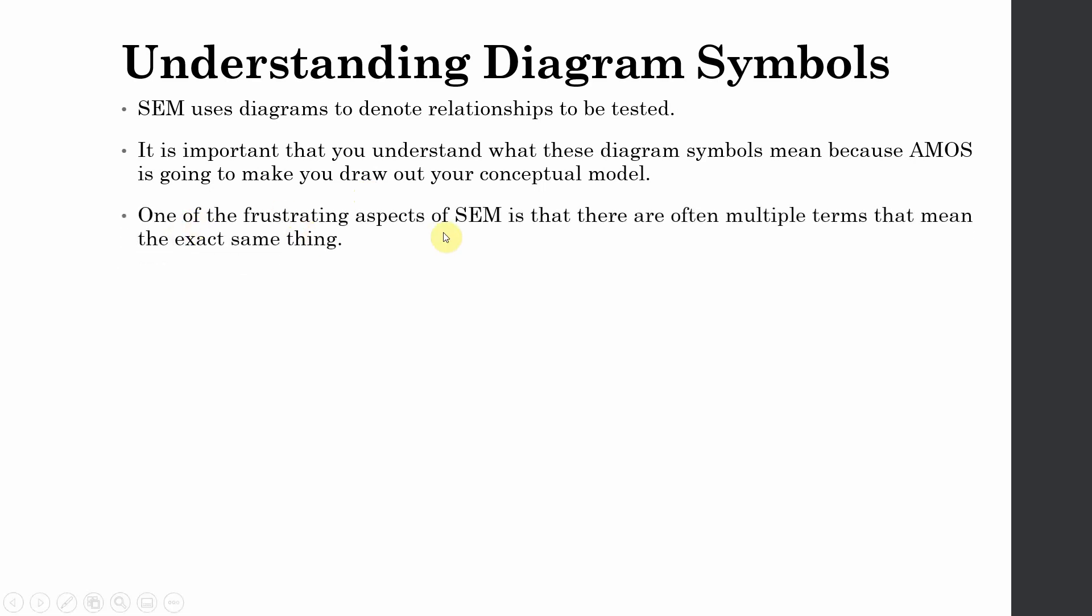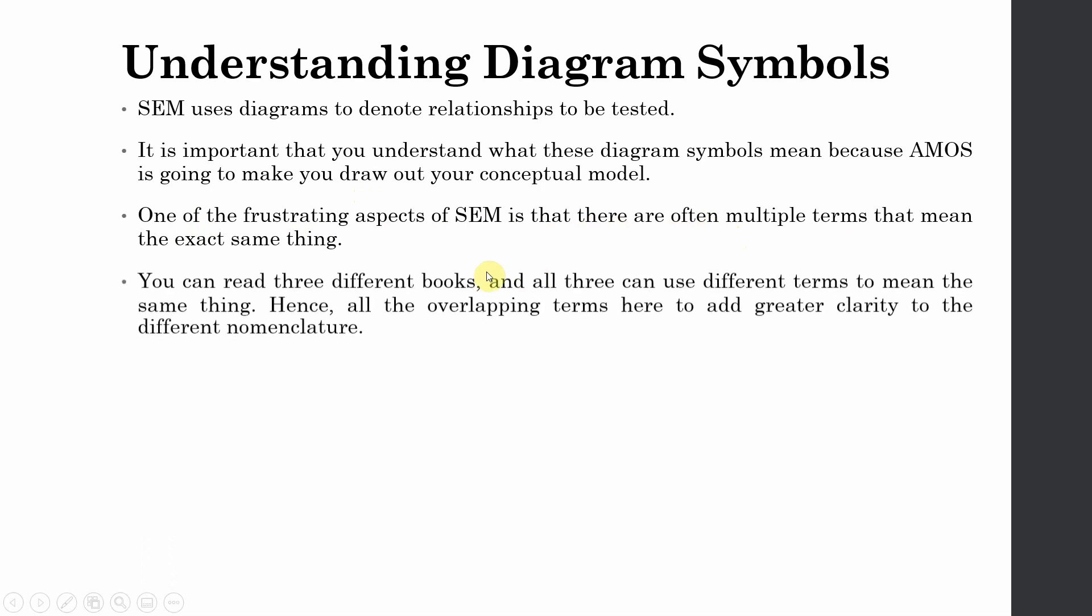One of the frustrating aspects of SEM is that there are often multiple terms that mean exactly the same thing. You can read three different books and all three different terms mean the same thing. They are using different terms but they actually mean the same thing. Hence, the overlapping terms here add greater clarity to the different nomenclature.